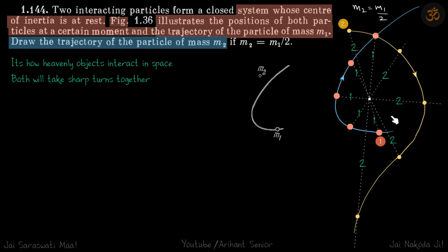We can notice from here that both take sharp turns together. So when m1 is taking a sharp turn, m2 will also take a sharp turn. And after that, m1 is going in kind of a straight line, then m2 will also continue to go in a straight line.